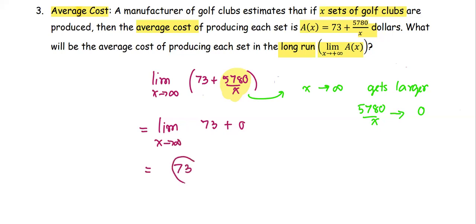So the answer is 73. Therefore, the average cost of producing each set in the long term will be $73.